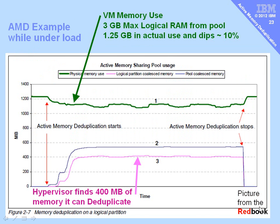This is a graph taken from the Redbook, one of their benchmark runs. Here we can see that they switched on active memory deduplication and roughly speaking it gave back about 10% of the memory that was being used, freeing it for other logical partitions. You can see there the 400 megabytes that were deduplicated — roughly 300 megabytes of that was reused by the logical partition itself for better purposes, and then about 100 megabytes was given back to the pool for other logical partitions to use.